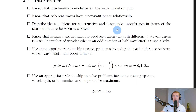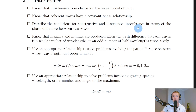You need to describe the conditions for constructive and destructive interference in terms of phase difference. For constructive interference, two waves are completely in phase — a crest meets a crest or a trough meets a trough. Destructive interference occurs when two waves meet exactly out of phase — a crest meets a trough.